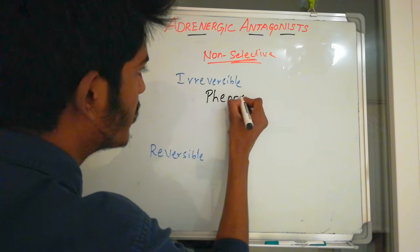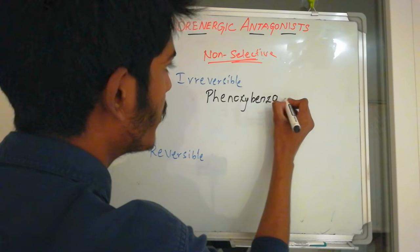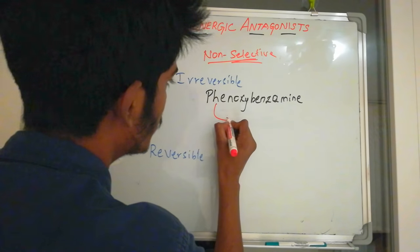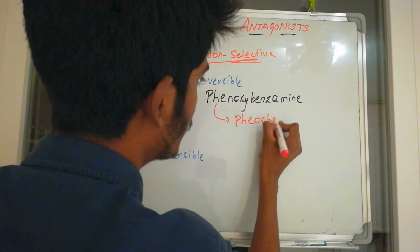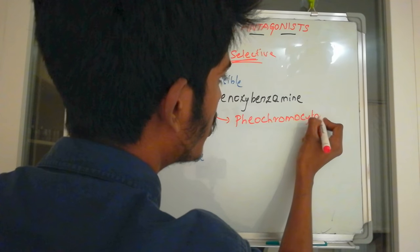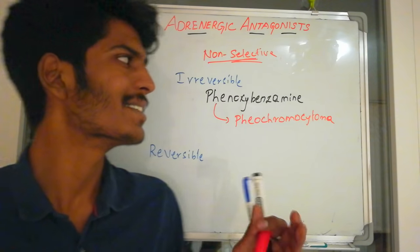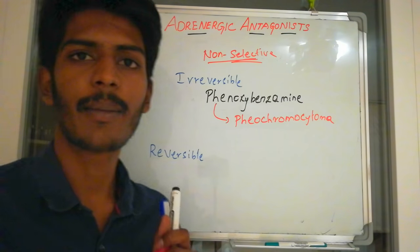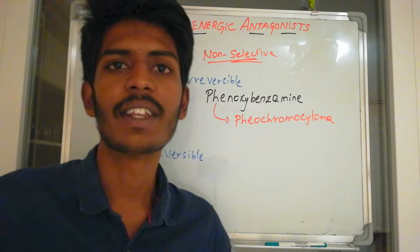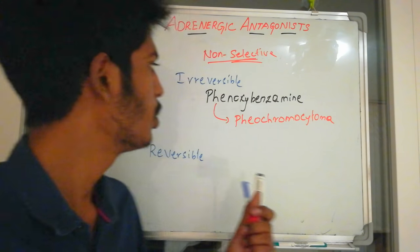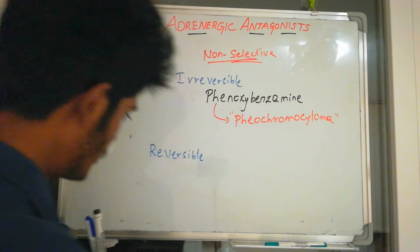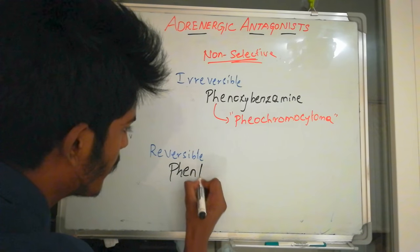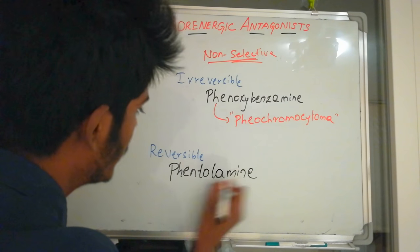The irreversible alpha blocker is phenoxybenzamine. This drug is used in a condition called pheochromocytoma — a tumor of the adrenal medulla that secretes increased levels of catecholamines. Because the block is irreversible, the body must synthesize new receptors to respond to catecholamines.